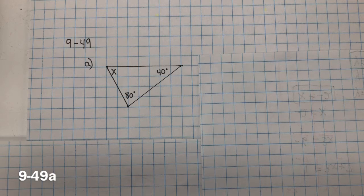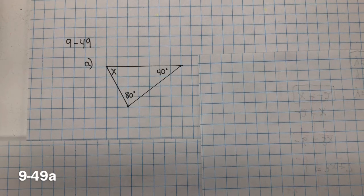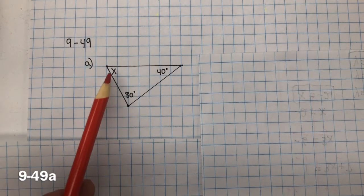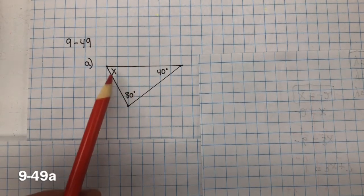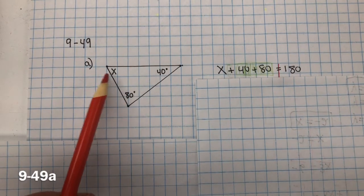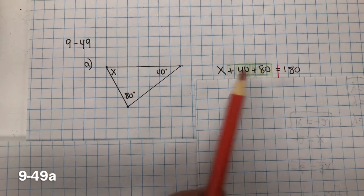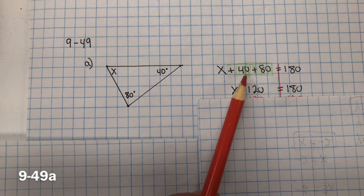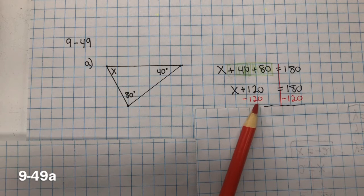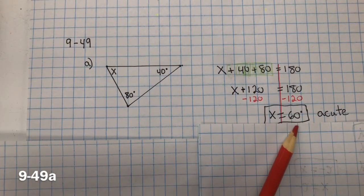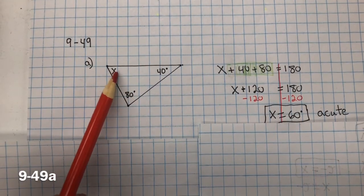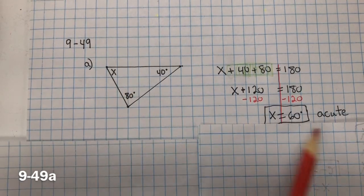For problem 949, we need to find X and then classify the triangle as acute, right, or obtuse. And remember, acute, the greatest angle measure is less than 90. A right angle's greatest measure is 90 degrees. And an obtuse, the greatest angle is greater than 90. So first we're going to solve for X. And remember that the sum of the interior angles of a triangle equal 180 degrees. So we have X plus 40 plus 80 equals 180 degrees. Now we combine like terms. 80 plus 40 is 120. Inverse property of addition is subtraction, so we subtract 120 from both sides. And we get X equals 60. So if we go back here, X equals 60, the greatest angle measure is 80 degrees. So that's an acute triangle.